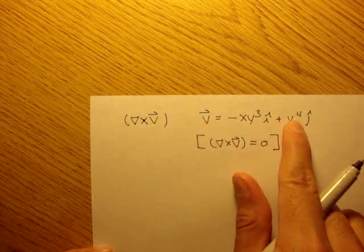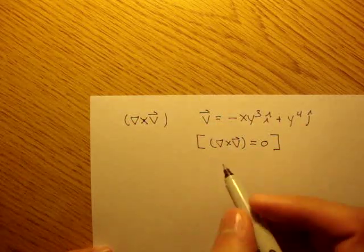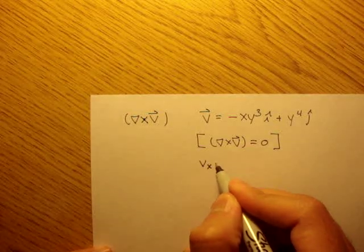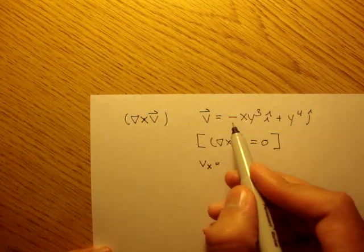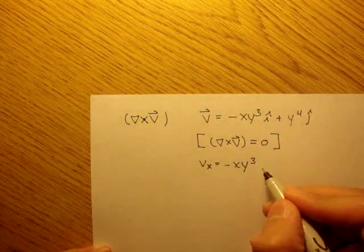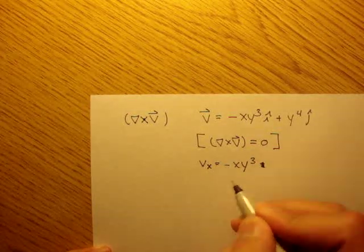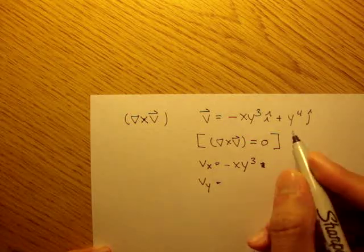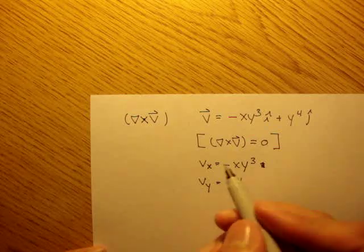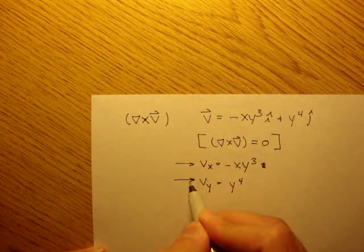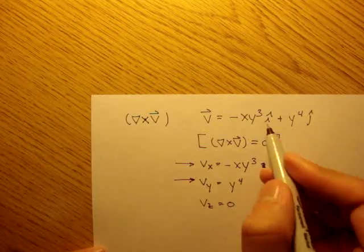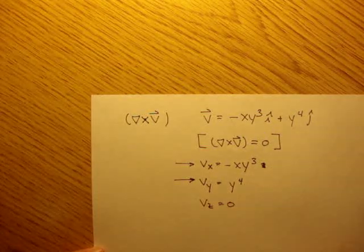Let's split this up into components to make things a little easier. The x-component of this velocity field, v_x, is negative x·y³. The y-component, v_y, is y⁴. V_z is zero — it's a two-dimensional flow, so there's no z component.